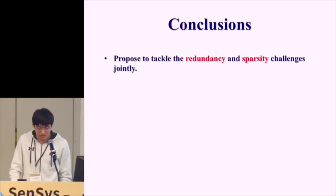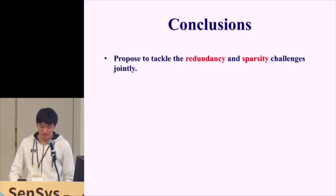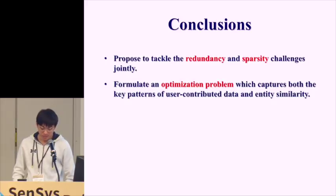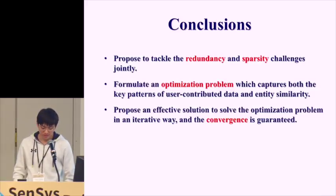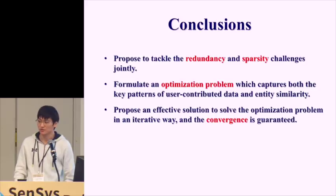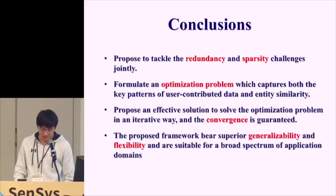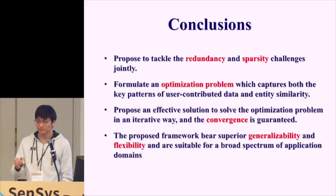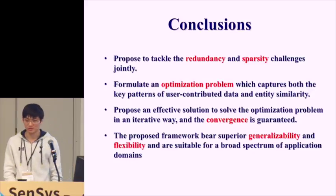In conclusion, we propose to tackle redundancy and sparsity challenges in crowd sensing applications jointly. We formulate an optimization problem that captures key patterns of user-contributed data and entity similarities. We propose an effective iterative solution with theoretically guaranteed convergence. The proposed framework is general and flexible, suitable for a broad spectrum of application domains. Thank you.